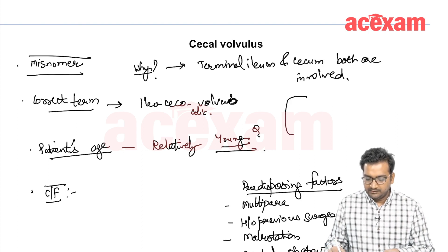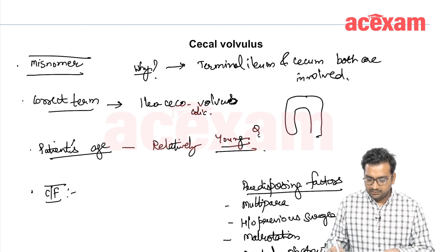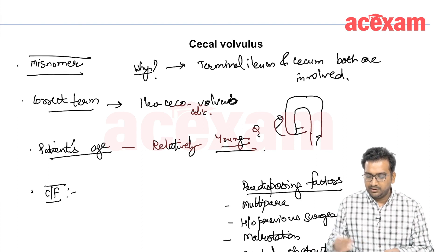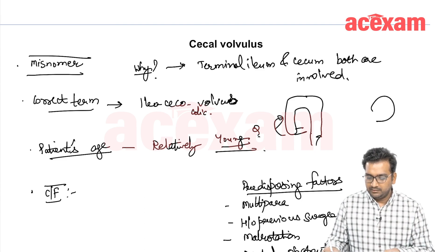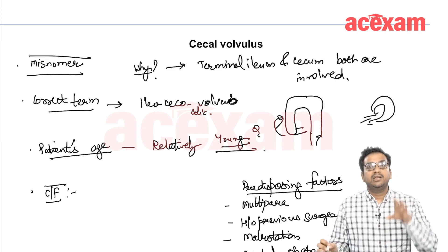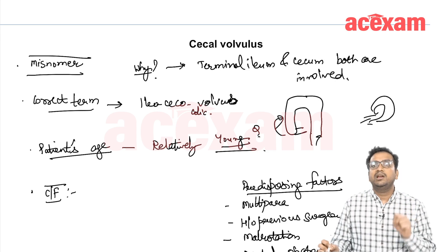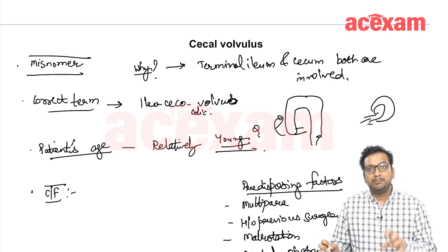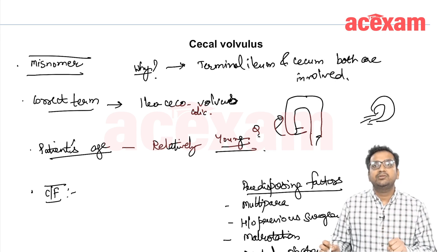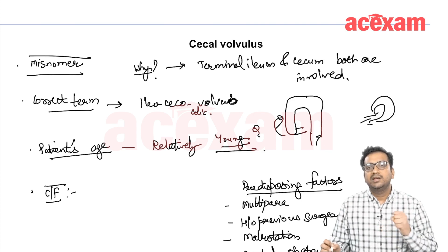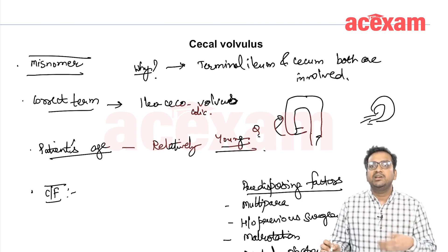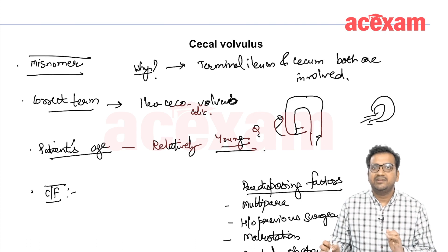Here you can see the cecum and colon. This cecum is rotating, so it will end up somewhere else. The cecum and the small intestine will be displaced. Because of that, there will be obstruction at the level of the terminal ileum or cecum, and the patient will present with clinical features of small bowel obstruction — abdominal distension, bilious vomiting, and inability to pass stool.